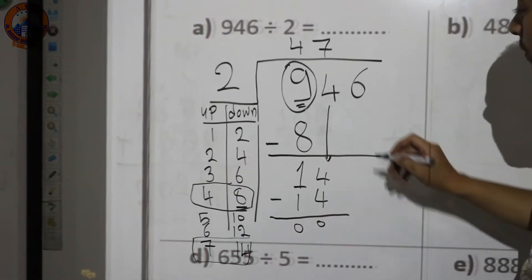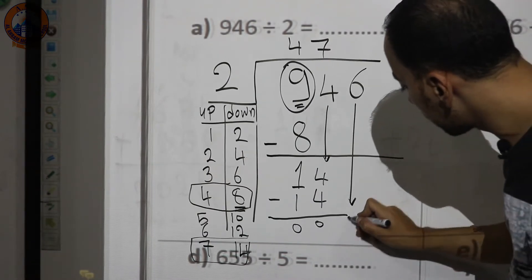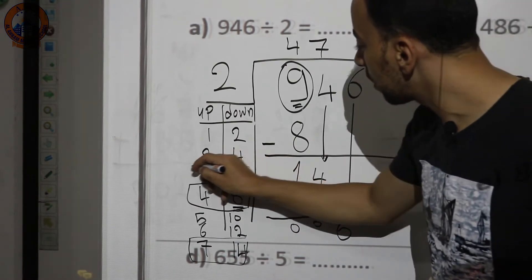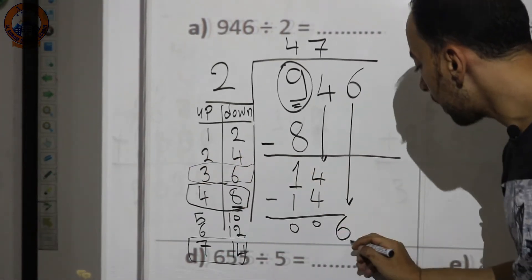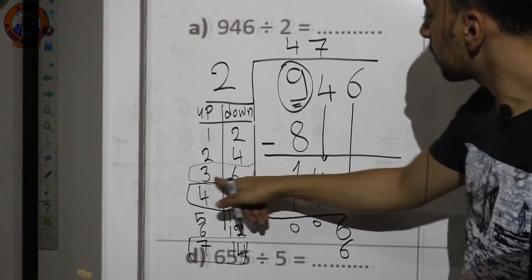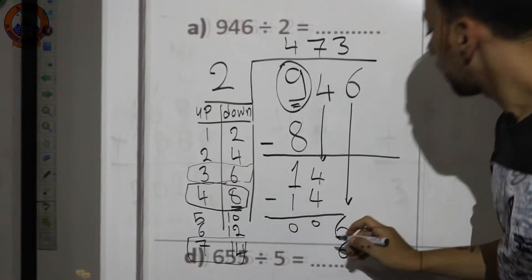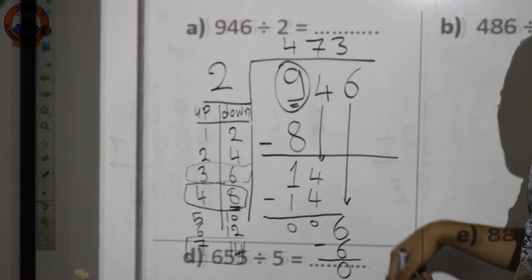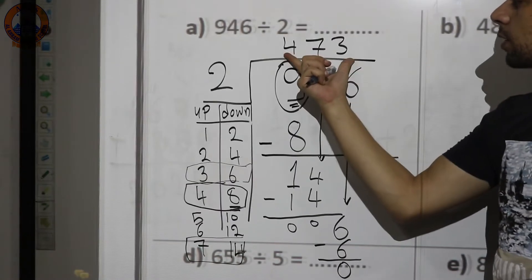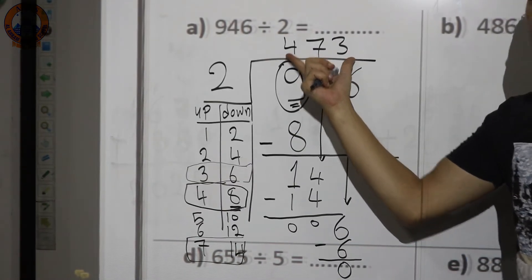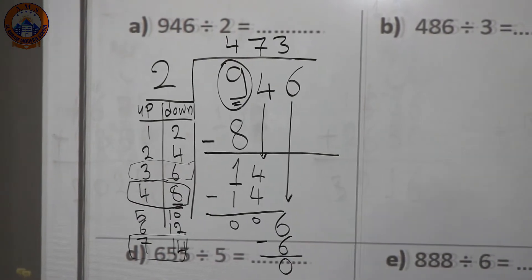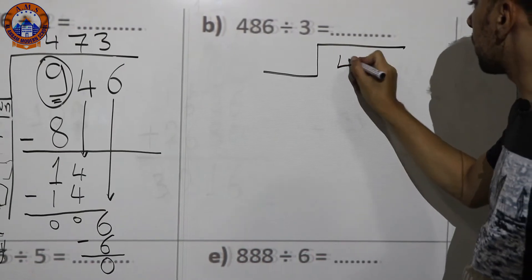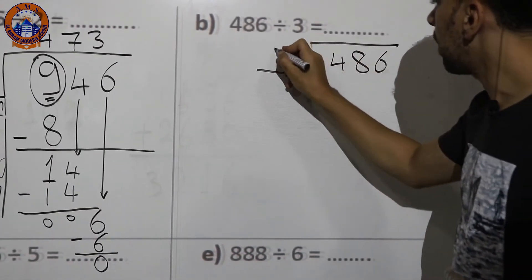Bring down the next number, 6. Search for 6 in the table — here it is. Put 6 down and 3 up. Subtract: 6−6=0. There are no other numbers to bring down, so the answer is 473.